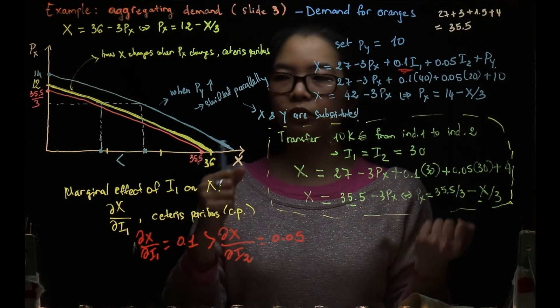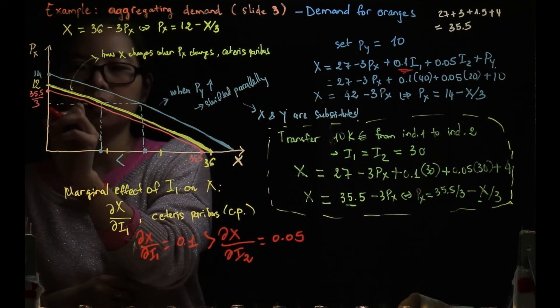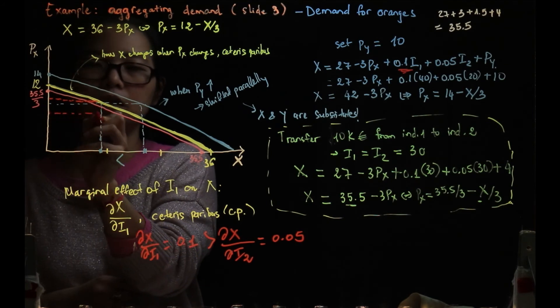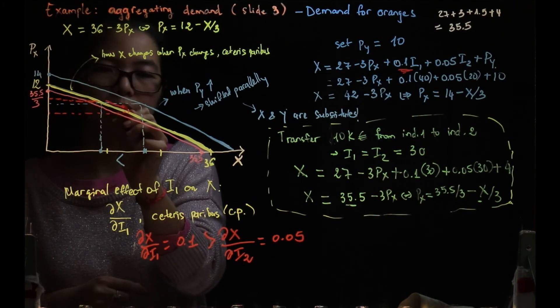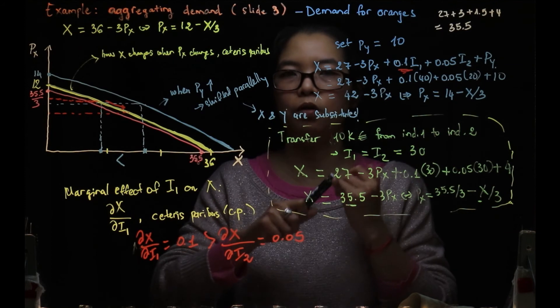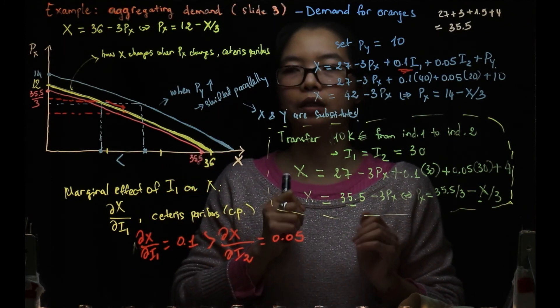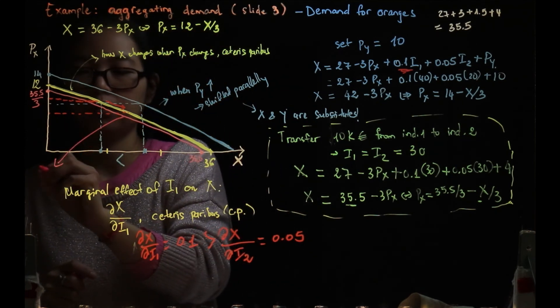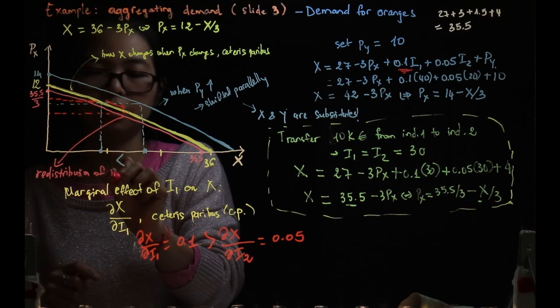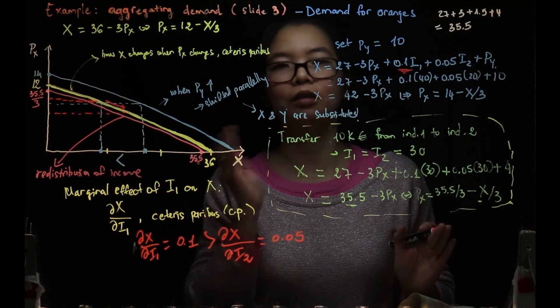So to sum up, you have seen already that when the price px changed, it will cause a movement along the demand curve. However, if everything apart from px, like py, I1, I2 changes, that will cause a shift in the demand curve parallel. This is about redistribution of income. That is why the distribution of income matters, exactly because of this marginal effect.